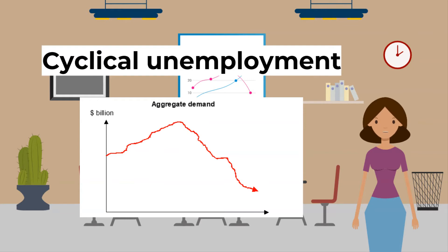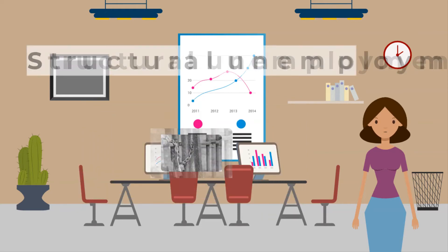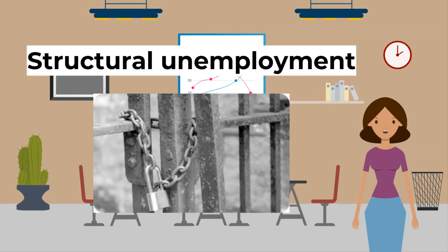Cyclical unemployment is the prolonged, widespread unemployment during an economic recession due to falling and depressed aggregate demand — an example is the global recession of the late 2000s or currently during the pandemic. Finally, structural unemployment is long-lived unemployment caused by industrial decline, where many workers are made unemployed and have skills that are no longer wanted. This has happened with steel manufacturing in the USA.